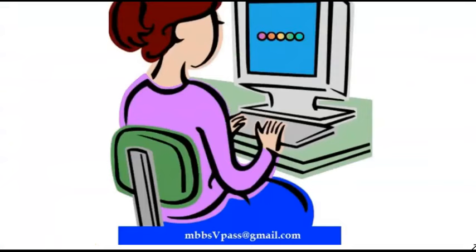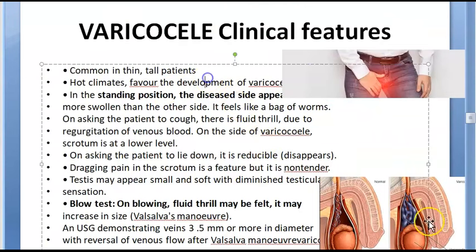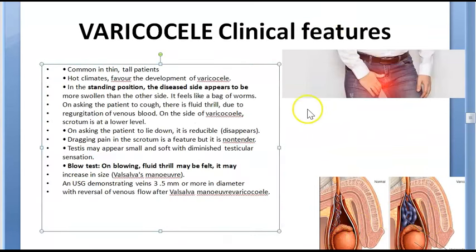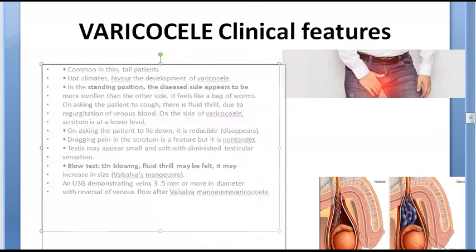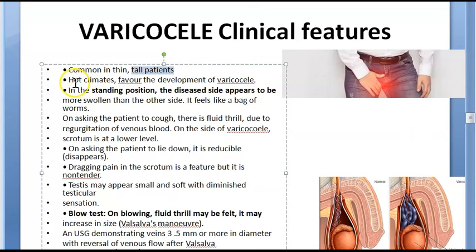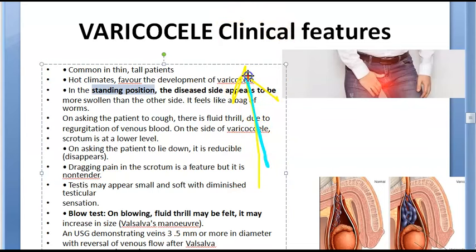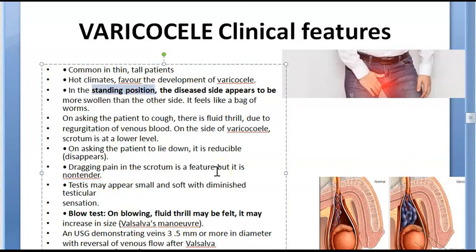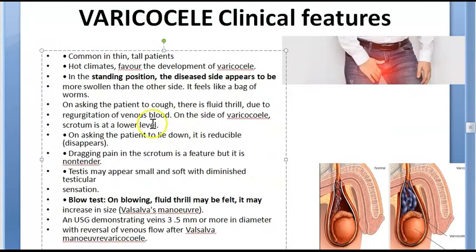Now let's look at the clinical features of varicocele. It usually occurs in thin, tall patients. Height is relevant because drainage is against gravity. It is also associated with hot climates and people who stand for long periods, such as policemen and security guards — similar to how varicose veins develop in the legs.